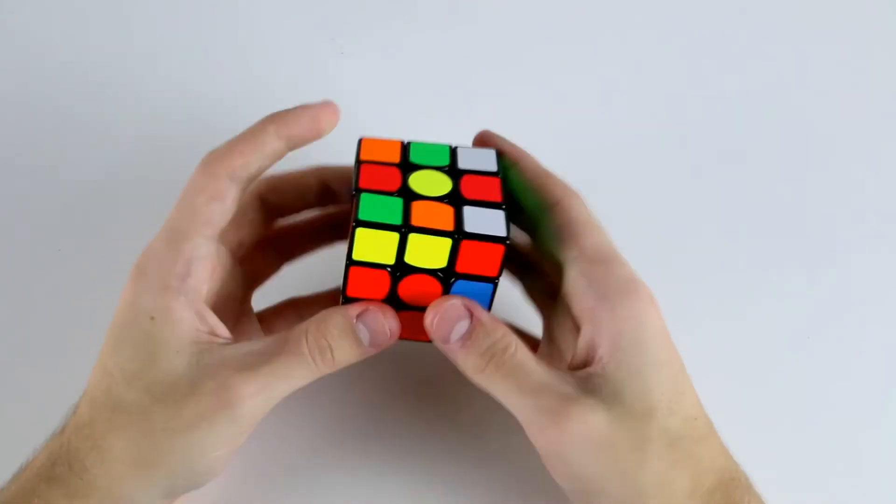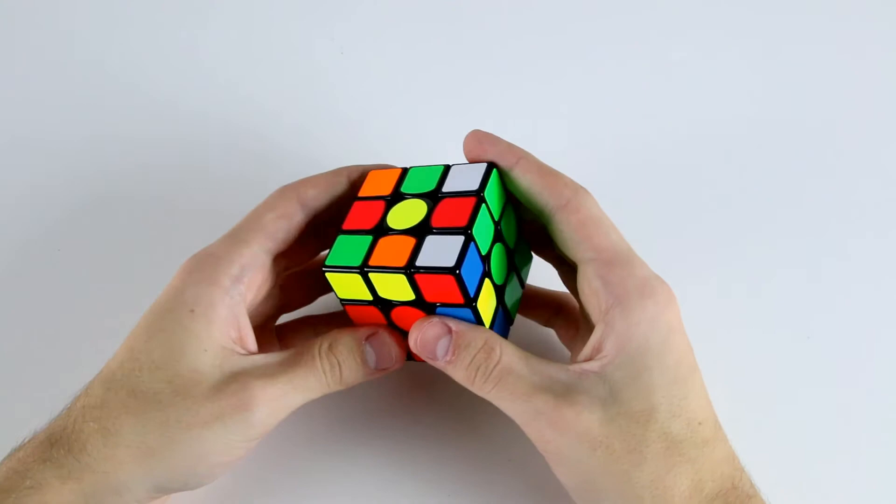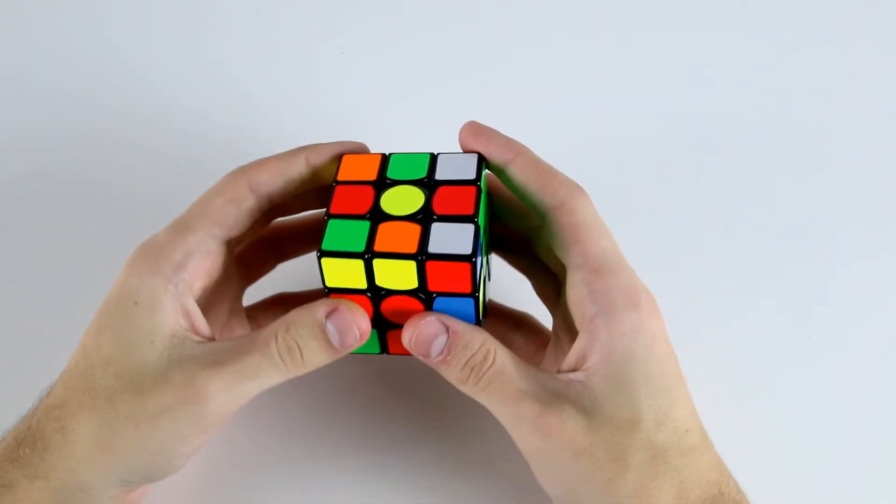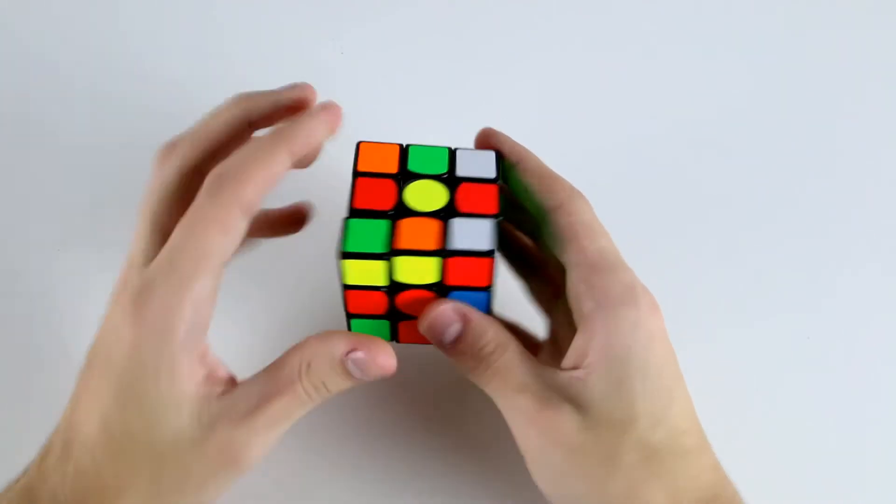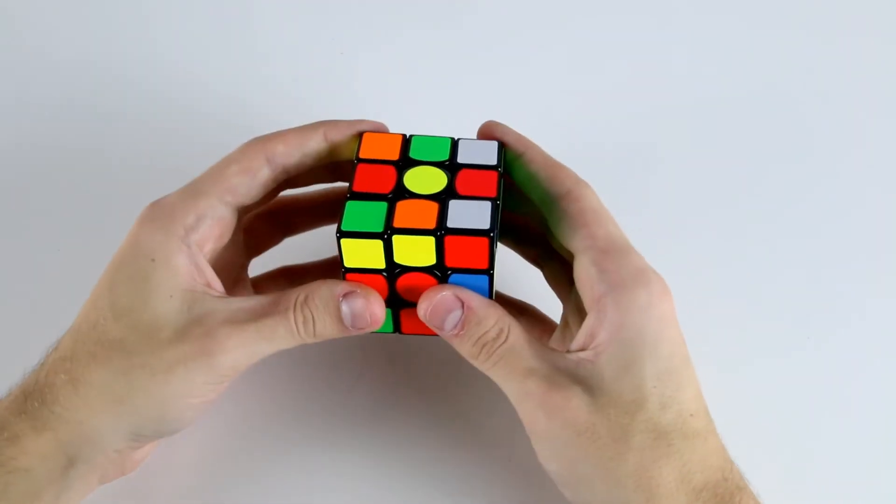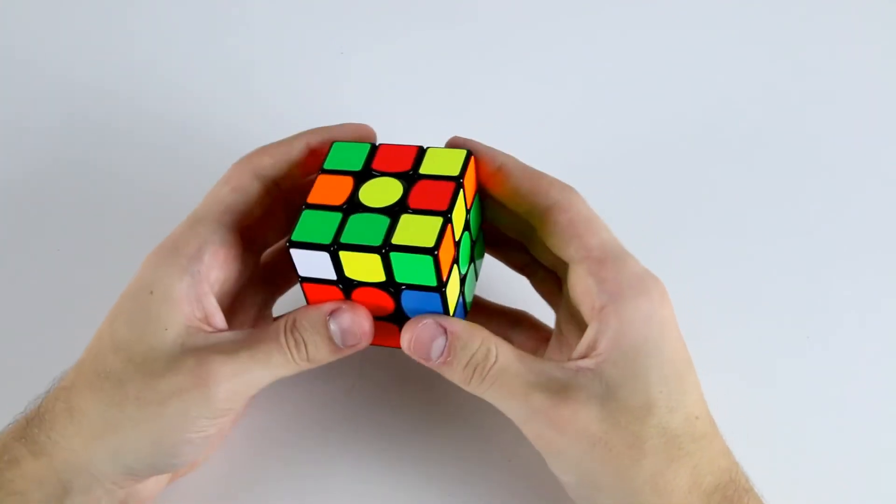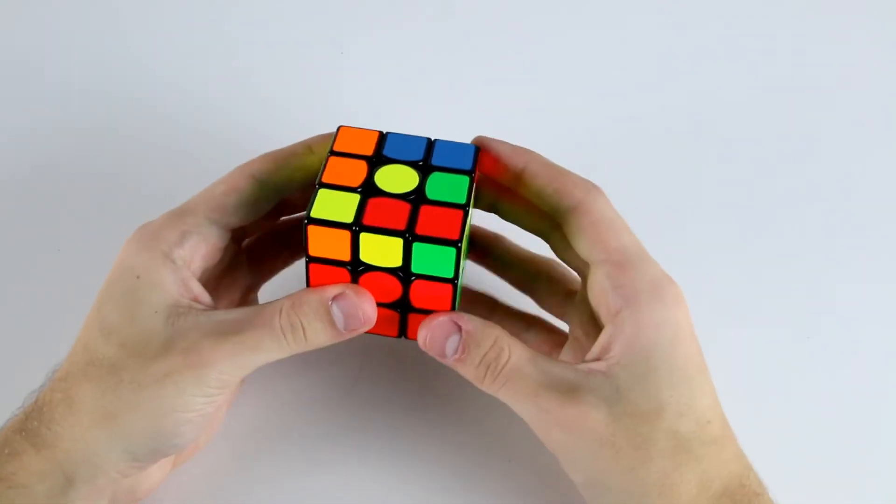So what we can do is do another rotation to put these two slots in the front. Now these two edges are both correctly oriented. To actually solve this F2L pair, we can solve both of these F2L pairs in a really easy manner without doing any rotations. Now that they're oriented, we can just go L' U2 L U' L' U L and then this one like that.